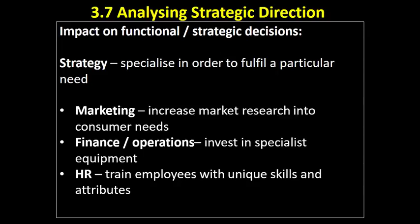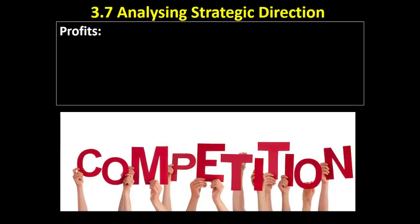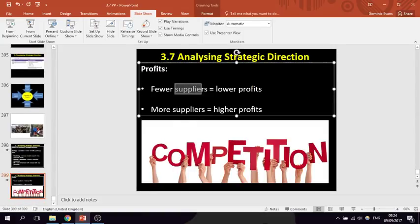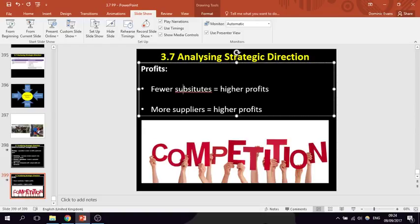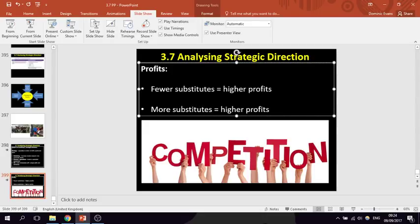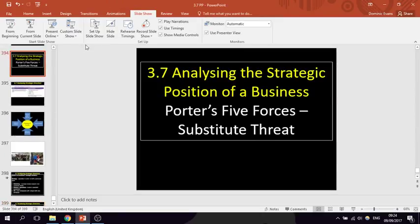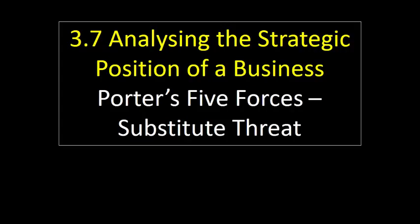The key thing to take away: the more substitutes that there are, the more competitive the organisation is going to have to be in terms of trying to attract customers by dropping prices and things like that. The fewer substitutes, the better for the organisation. Fewer substitutes should equal higher profit, and more substitutes is equal to lower profit. So that's Porter's five forces looking at the threat of substitutes.